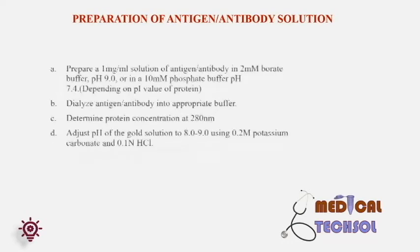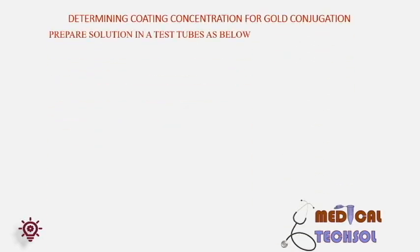Preparation of antigen or antibody solution: 1. Prepare a 1 mg/ml solution of antigen or antibody in 2 mM borate buffer pH 9.0, or in 10 mM phosphate buffer pH 7.4, depending on the pI value of the protein. 2. Dialyze the antigen or antibody into the appropriate buffer. 3. Determine the protein concentration at 280 nm. 4. Adjust the pH of the gold solution to 8–9 using 0.2 molar potassium carbonate and 0.1 N HCl.